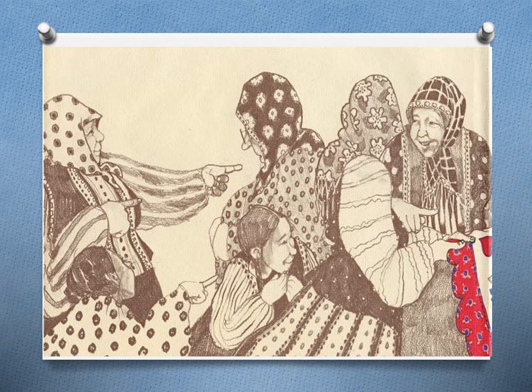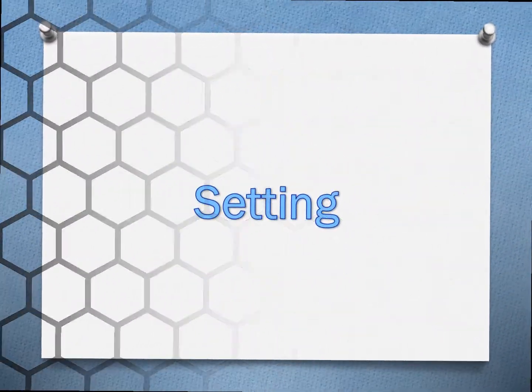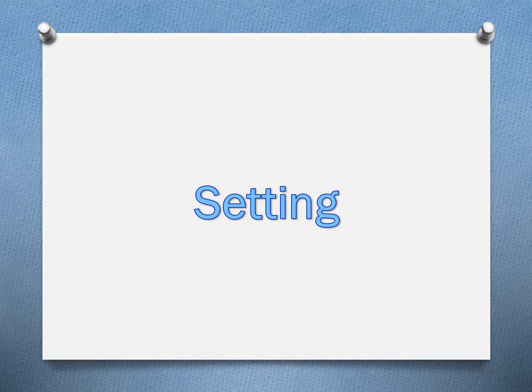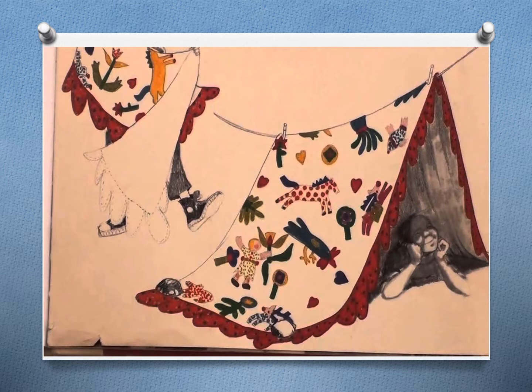Why do you think this is? The setting takes place in America, when a Russian family migrates to New York. The quilt is made in New York, but as the story progresses, it travels across the country as it travels through different generations.